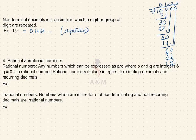Next type is rational and irrational numbers. Rational numbers: any number which can be expressed as P/Q where P and Q are integers and Q is not equal to 0. Rational numbers include integers, terminating decimals, and recurring decimals. Examples are 24/7, −4, 2, and 3/5. Irrational numbers are numbers in the form of non-terminating and non-recurring decimals. Examples are √2, √3, √5, etc.